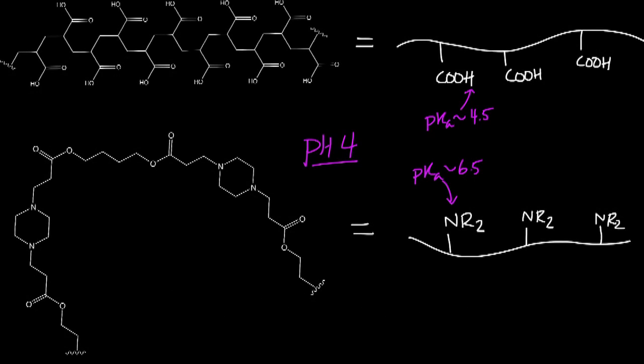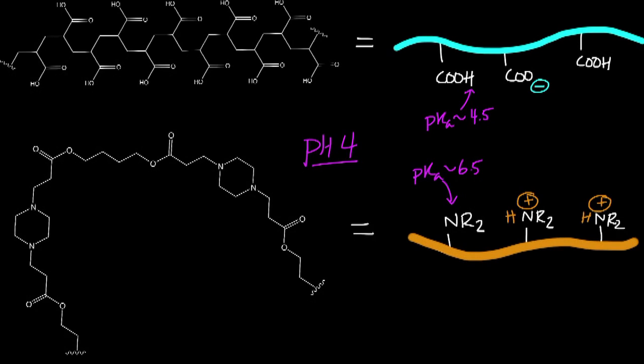At a pH of 4, some of the carboxylic acid groups on our first polymer would be deprotonated, resulting in a negative charge. At the same pH, some of the amine groups on our second polymer pick up an extra hydrogen, resulting in a positive charge.